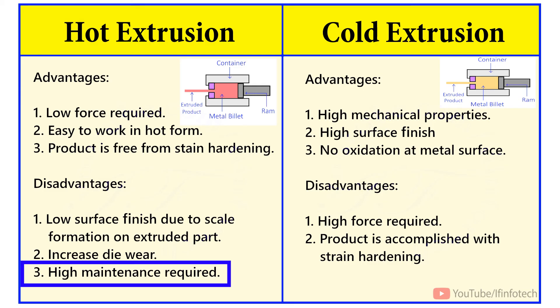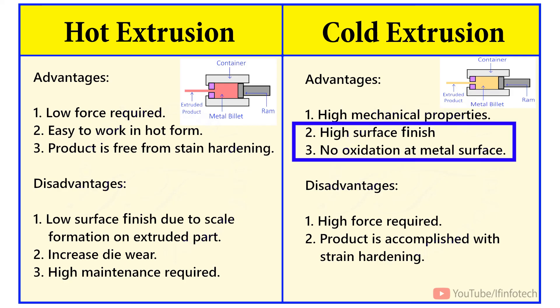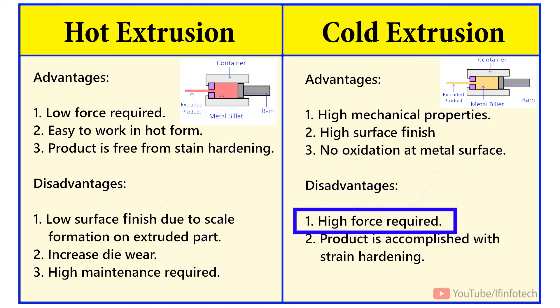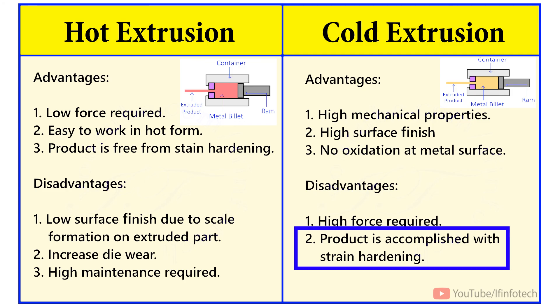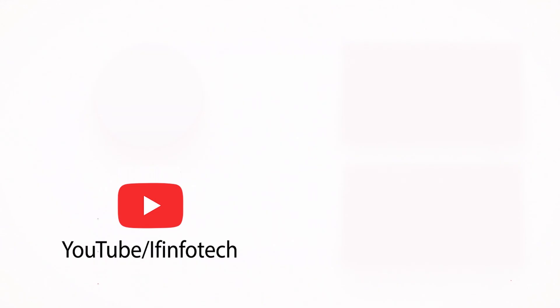Hot extrusion process requires high maintenance. In cold extrusion process, there are high mechanical properties of the extruded product, the product has high surface finish, and there is no oxidation at the surface of the extruded product. The force required to press the metal billet is high and the extruded product is accomplished with strain hardening.